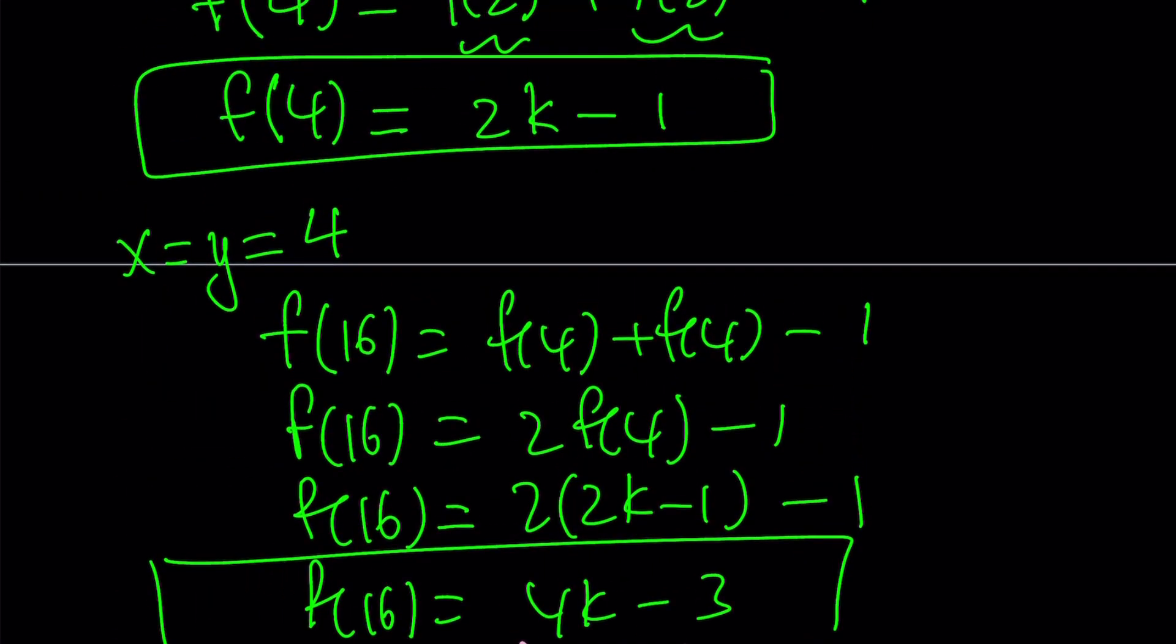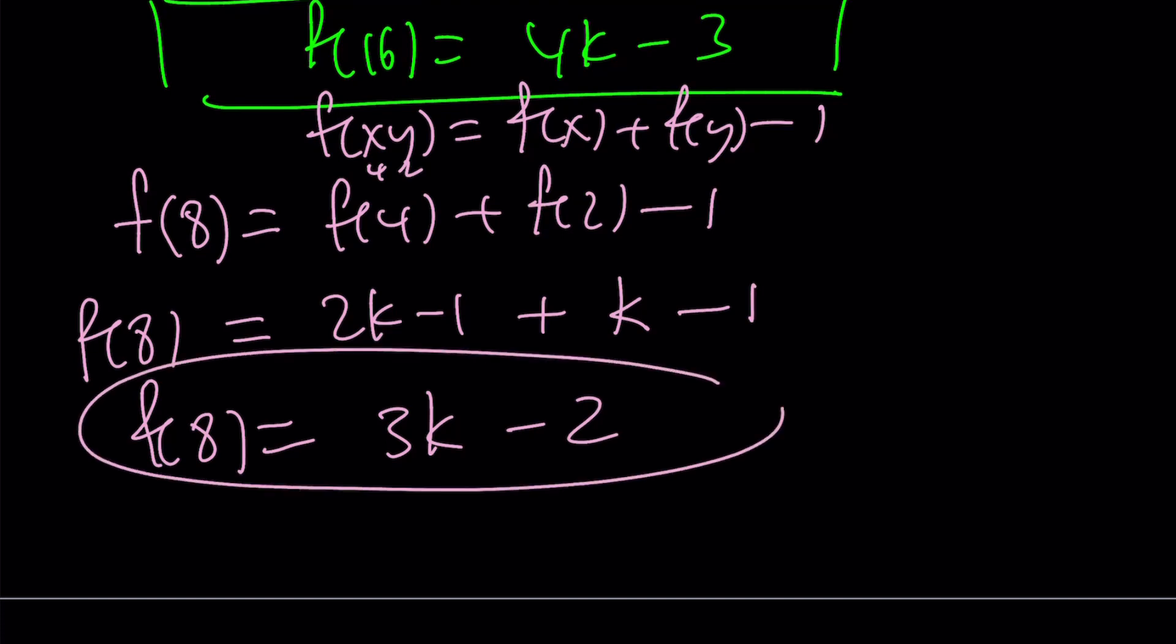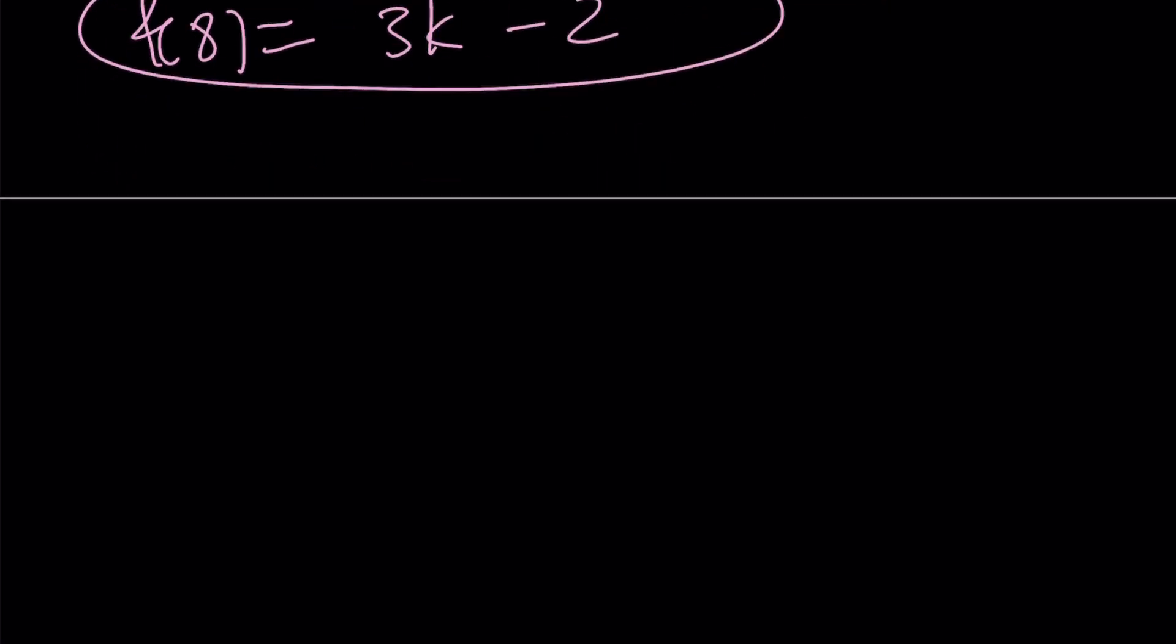f of 4 is equal to 2k minus 1, just using our cheat sheet. And f of 2 is given as k, remember? So from here, f of 8 becomes 3k minus 2. Awesome, you were able to find f of 8. How about f of 1? Can we find f of 1? Let's give it a try.